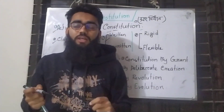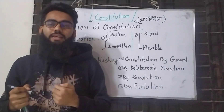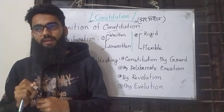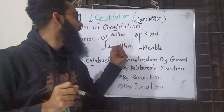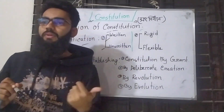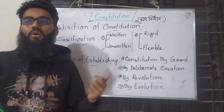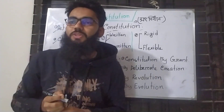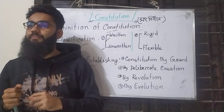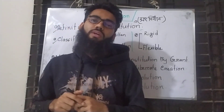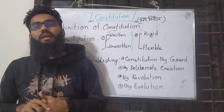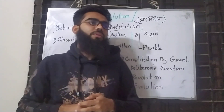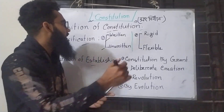How do we classify constitutions as written? A written constitution is one where the constitutional provisions are written down in a single document. It is written and recorded in a formal document — this is the written form of the constitution.